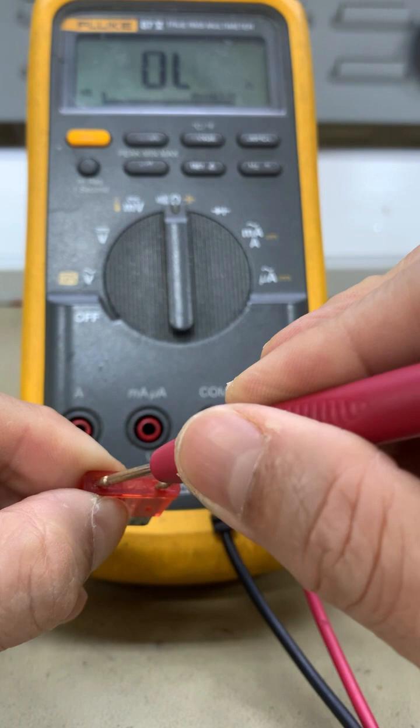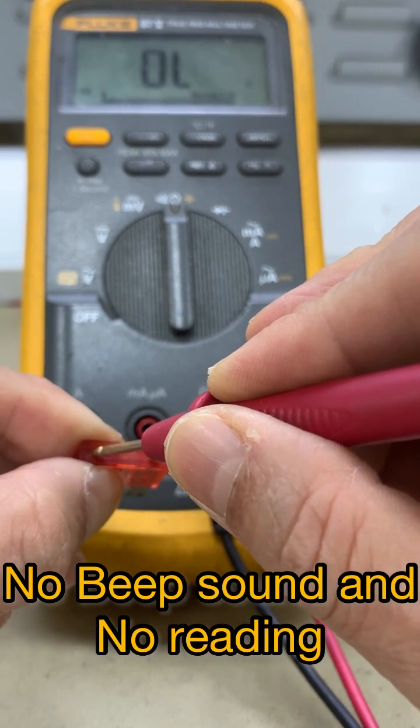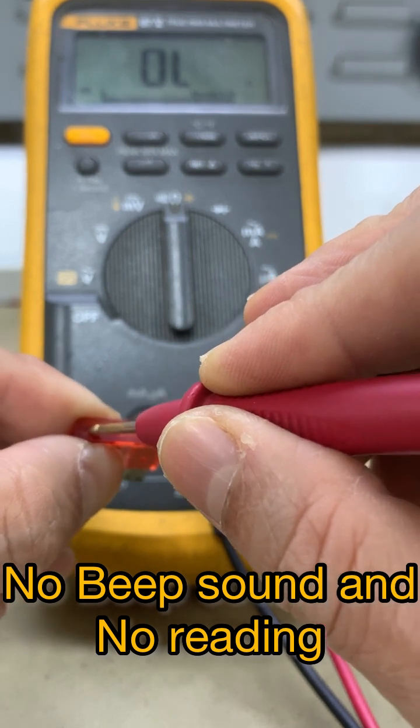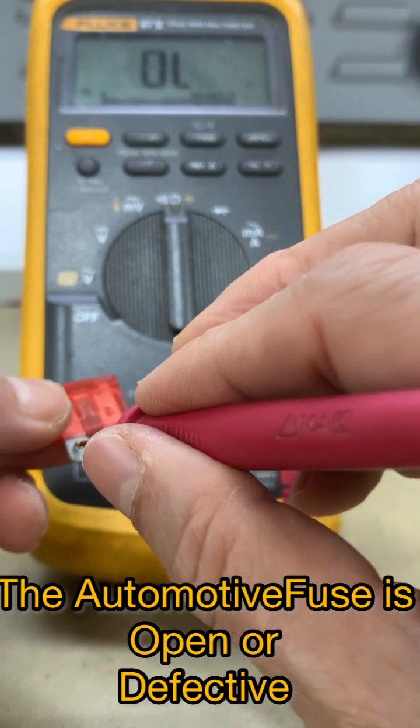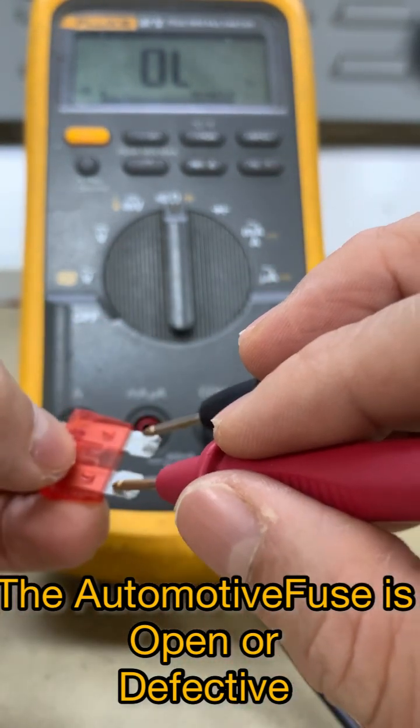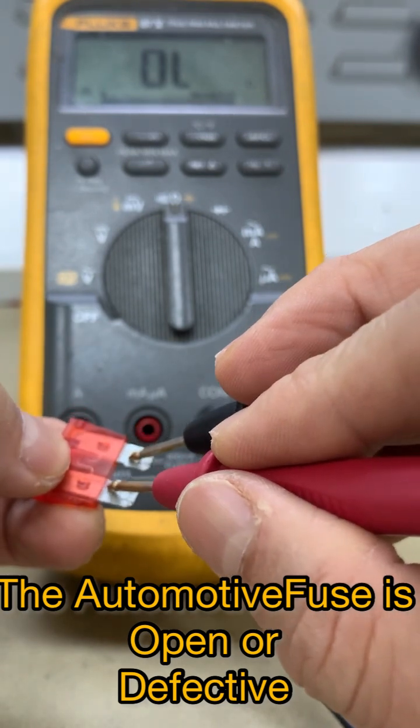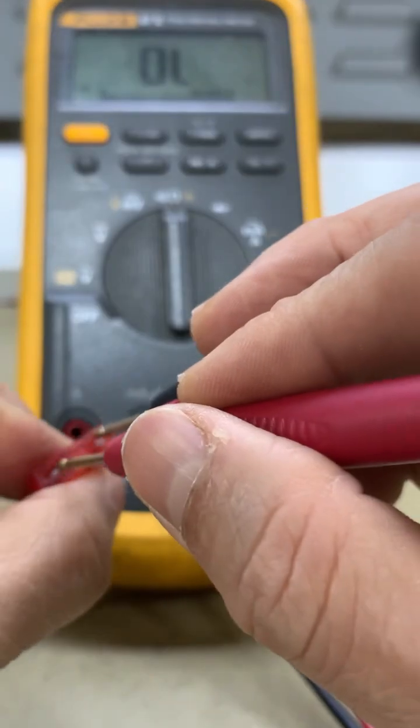So there is no reading, there is no beep, so it means this fuse is defective. This fuse is open. Even if we directly test here at the top pin here, so there is no reading. It's open. This automotive fuse is open.